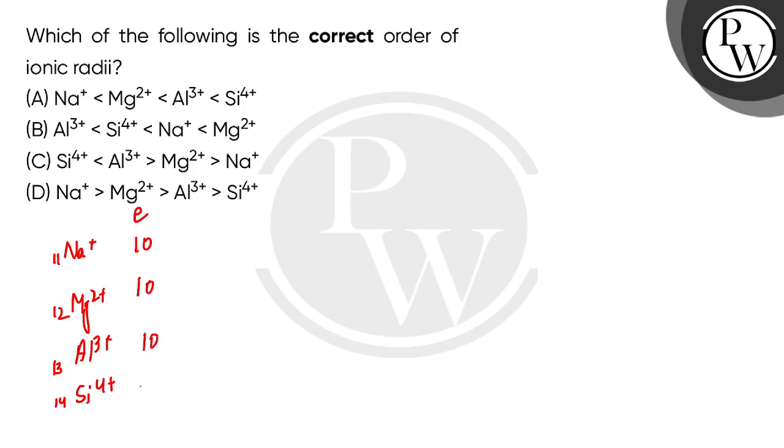And silicon 4 positive has 10 electrons. So if I compare p by e ratio, what happens? 1.1, this is 1.2, this is 1.3, and this is 1.4.